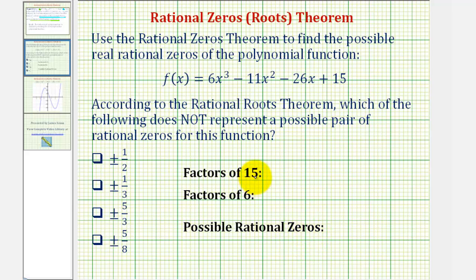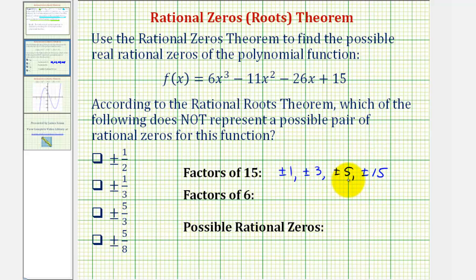We'll consider both the positive and negative factors. For 15, we have plus or minus one, plus or minus three, plus or minus five, and plus or minus fifteen — the integers that divide evenly into 15. For the factors of six, we have plus or minus one, plus or minus two, plus or minus three, and plus or minus six.